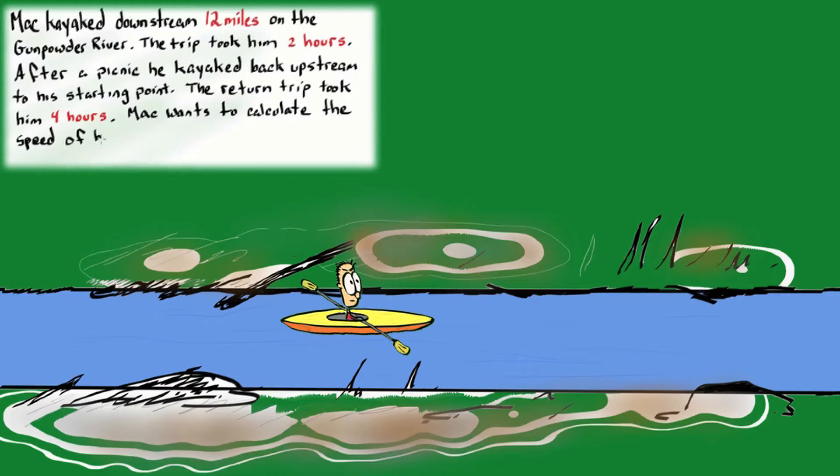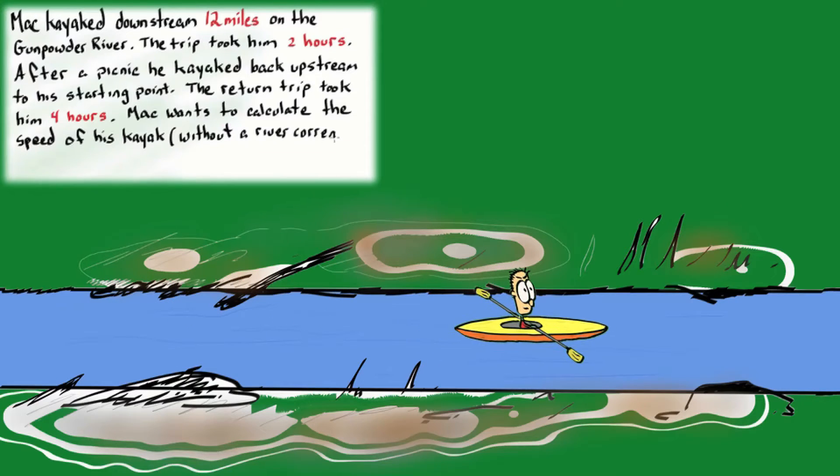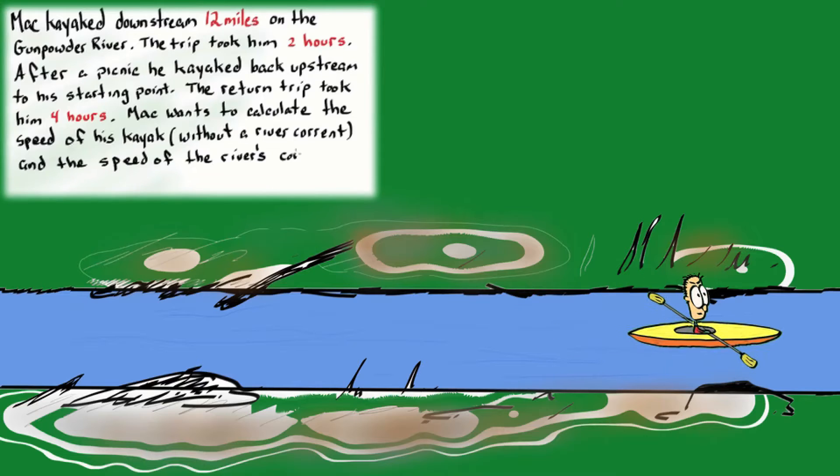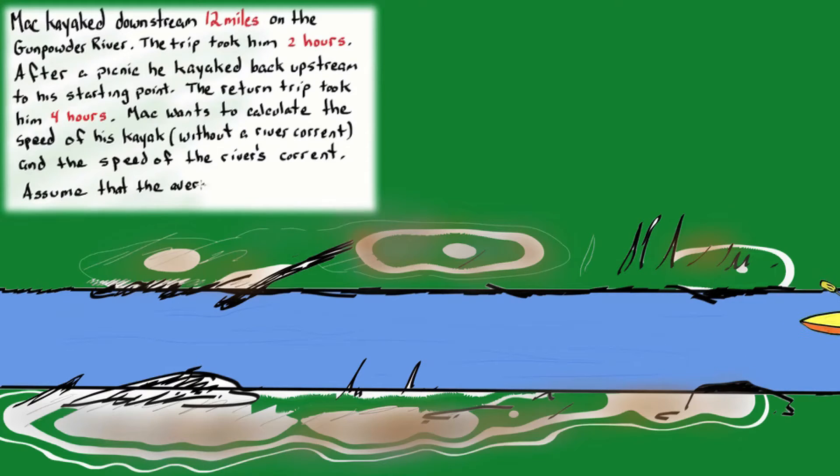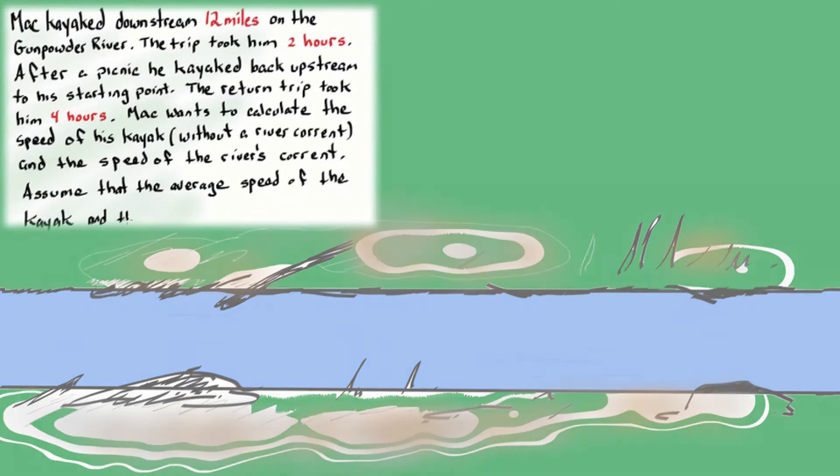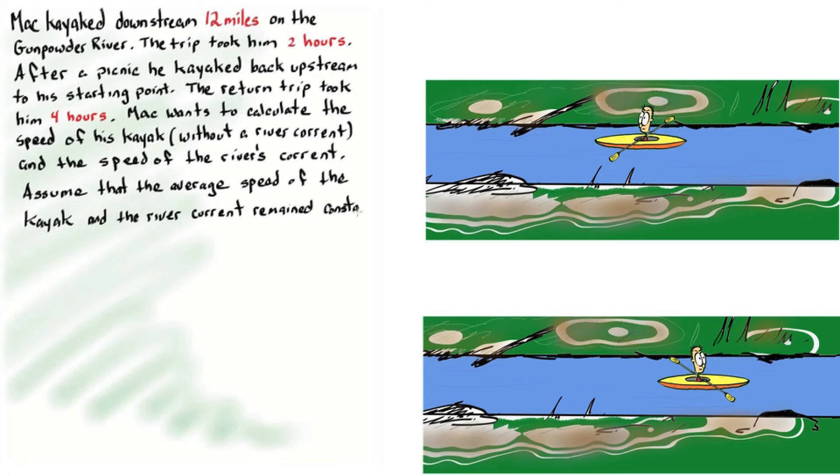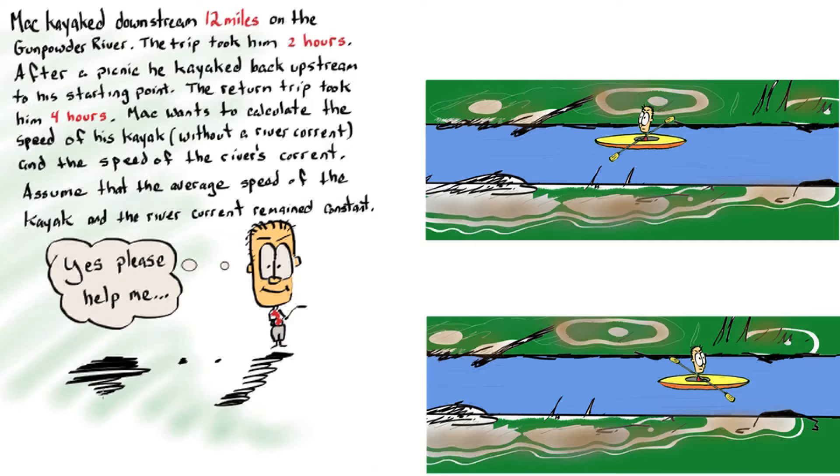Matt wants to calculate the speed of his kayak without a river current and the speed of the river's current. Assume that the average speed of the kayak and the river current remain constant. Can you help Matt? Pause the video and try to solve it without the solution.